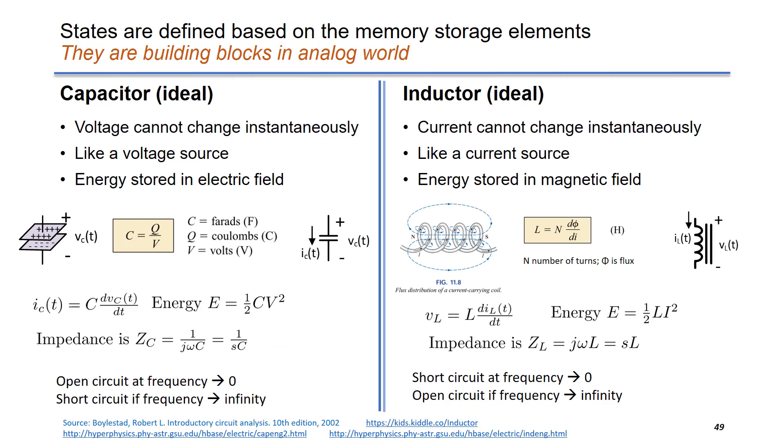So they are very basic building blocks in analog world. At the left-hand side, we have capacitors. So it's like a voltage source because the voltage cannot change instantaneously. The energy is stored in electric field. This is a simplified diagram of a capacitor. We have a positive charge on top and a negative charge at bottom. In the middle, we have dielectrics.